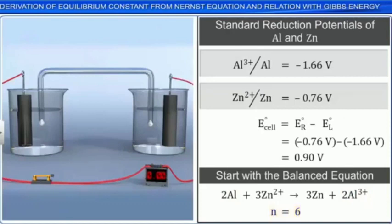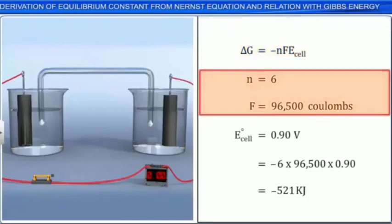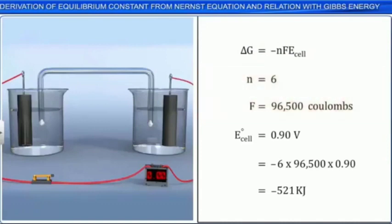You know that delta G is equal to negative NFE cell. You can substitute these values in the equation. We get the Gibbs free energy is equal to negative 521 kilojoules.